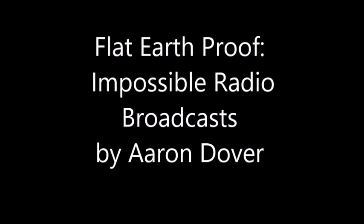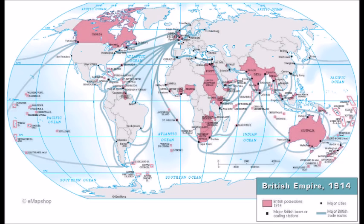Hi there, this is Aaron and I'm here with a video which is a new proof of the impossibility of the sphere earth model which is pushed on us all. Obviously there are lots of ways to prove that the surface of the earth has no curvature and is flat, but what's unusual about this one is you could describe this as a glitch in the matrix.